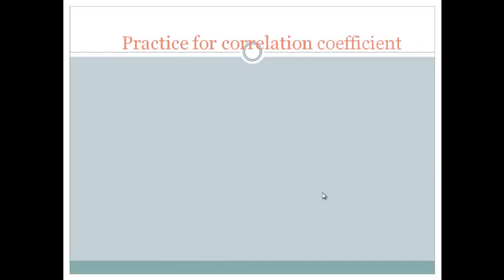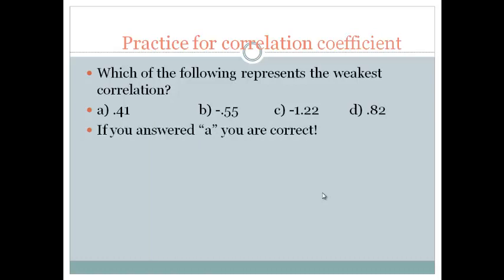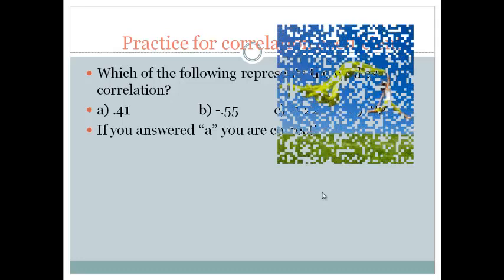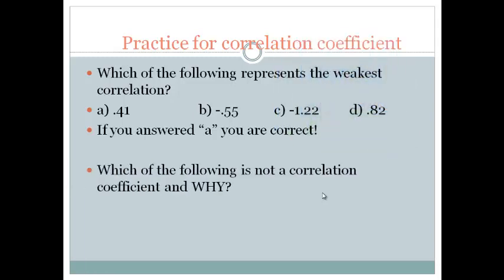How about practice? The following represents the weakest correlation. You want to pause this, take a look at it, before I give you the answer. If you answered A, you're correct. It's the farthest away from 1 or negative 1, or it's closest to 0. Now, we know C can't even be in the running because it's not even a true correlation. So if you answered A, you answered correctly. Which of the following is not a correlation? Be able to explain why, and the correct answer there, of course, is D, because it's outside the range. We'll talk about that again tomorrow.